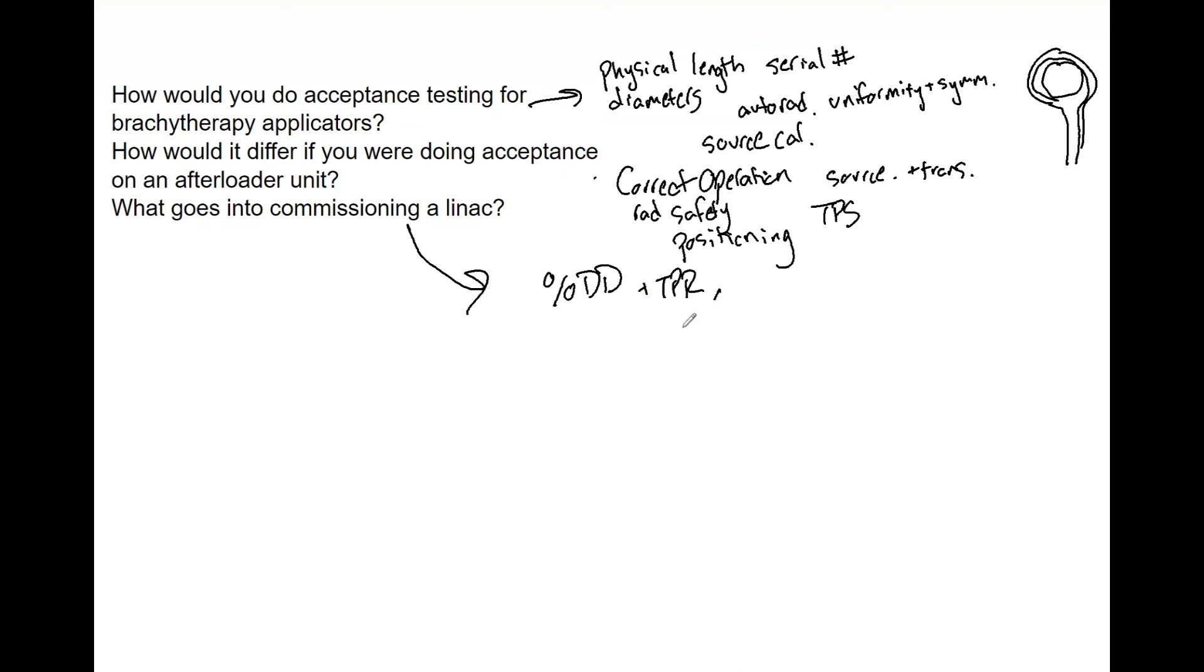You want to do your measured and computer-generated isocurves, and those need to agree within two percent. Normally, you can start with simple plans and then move into complexity to the point where you feel comfortable. You'd use a MapCHECK, you can use an ArcCHECK, portal dosimetry - there are a lot of different ways. Film